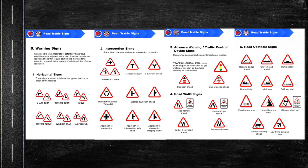When we see a traffic sign that says 'traffic lights ahead,' the driver must not park or stop within six meters of this sign, as it reduces visibility for the other drivers. Fourth is road width signs — road narrows ahead, end of the two-way road ahead, narrow bridge ahead, and two-way road ahead.